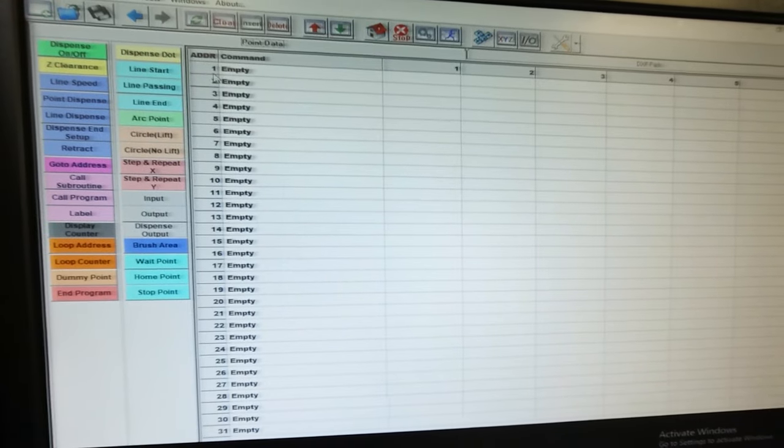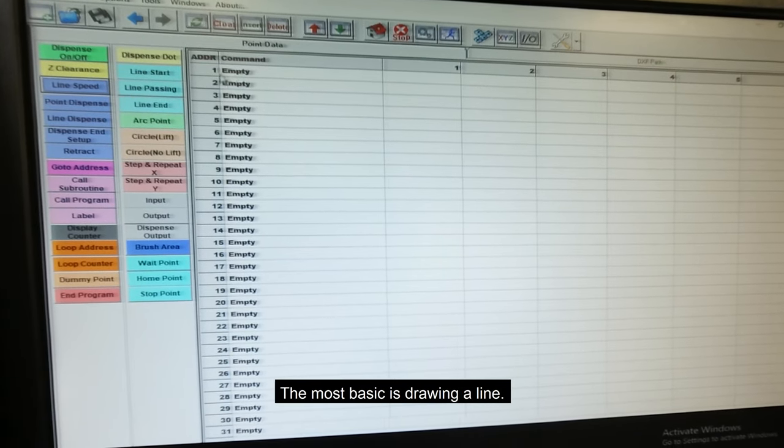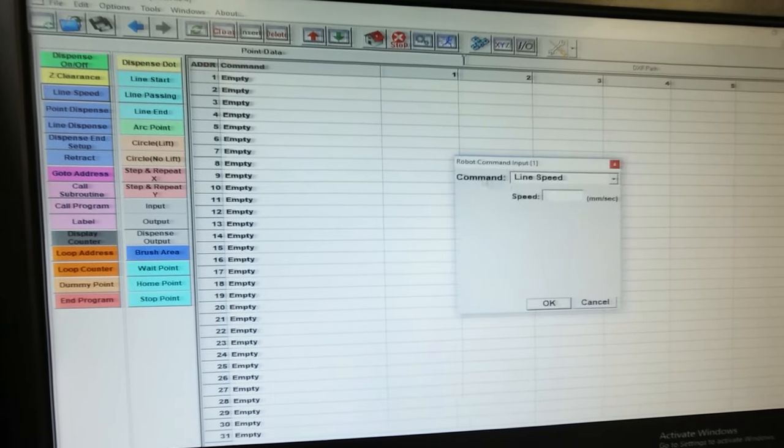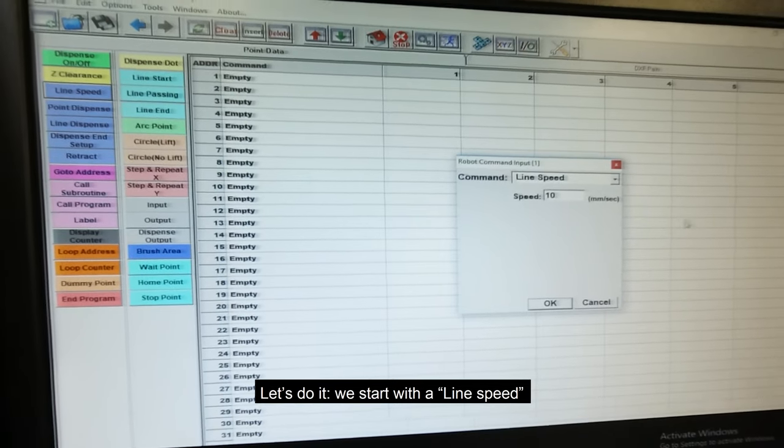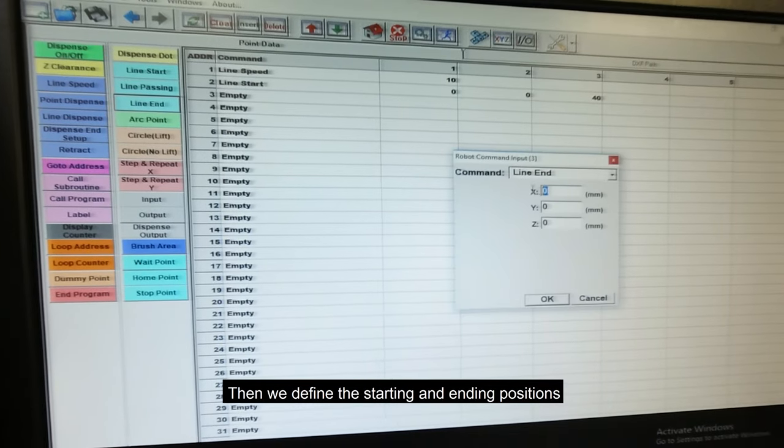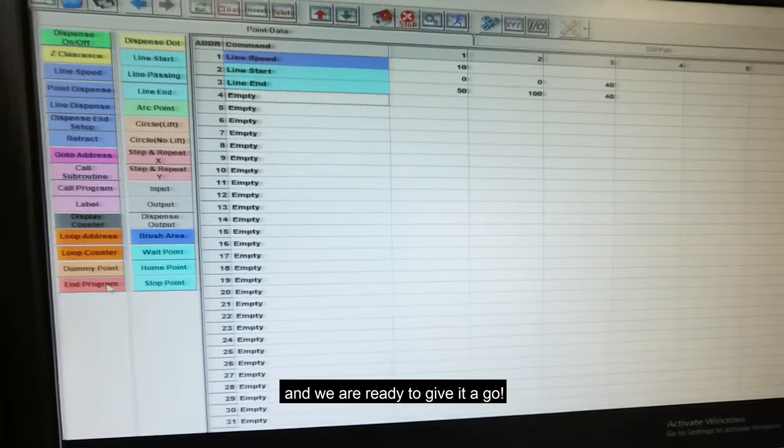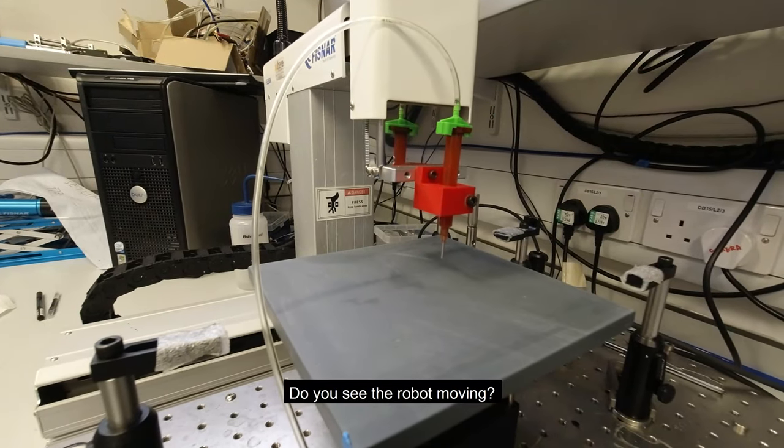Let's do some programming. This robot has a very simple software, where you can input commands. The most basic is drawing a line. Let's do it! We start with a line speed to tell the robot how fast it should move. Then we define starting and ending positions. We can then upload the code onto the robot and we're ready to give it a go. Do you see the robot moving?